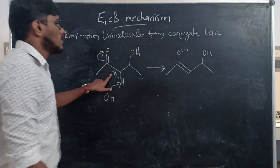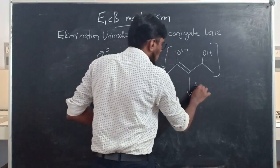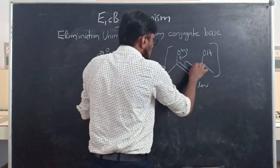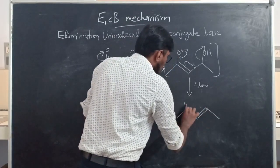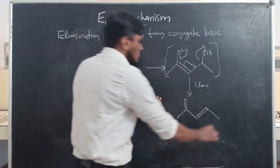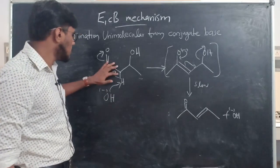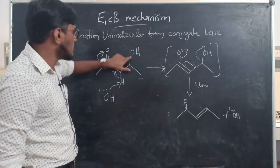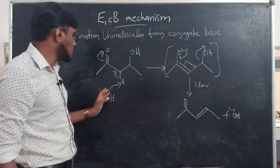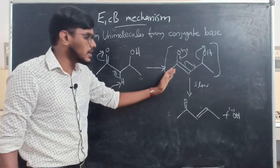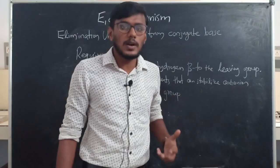This is the carbanion-like intermediate. In the next step, which is the slowest step, the electrons shift and the leaving group leaves, giving the product — an alkene — plus OH minus. In the first step, a proton is abstracted from the beta position to the leaving group; the alpha position is adjacent and the beta hydrogen is removed by a base, forming the carbanion intermediate and then the alkene product.